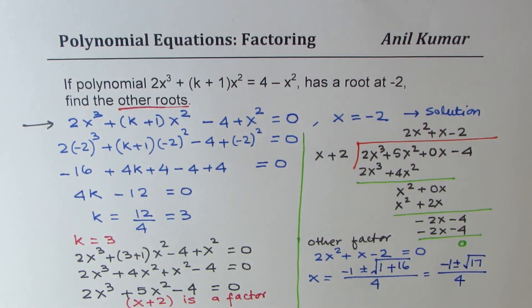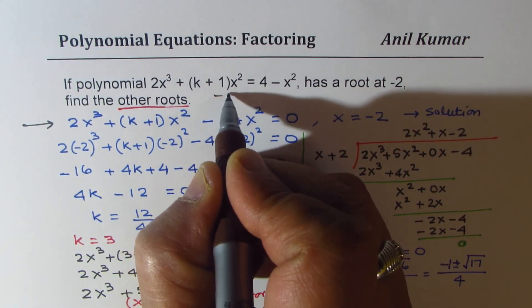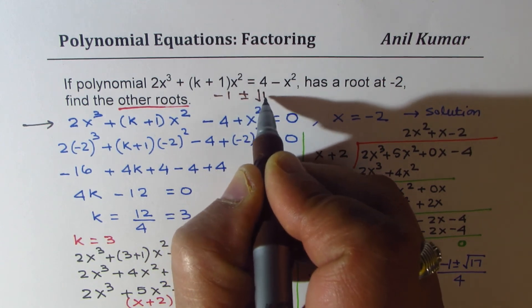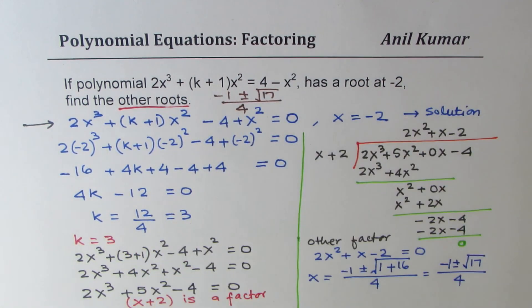Is that clear? So that is how we are going to answer this question. So the other roots are -1 plus minus square root 17 over 4. So I hope the steps are absolutely clear. Feel free to go through these steps again. Try to understand. And if you like and subscribe to my videos, that'd be great. Thanks for watching and all the best.